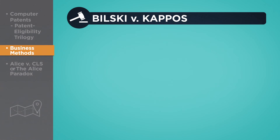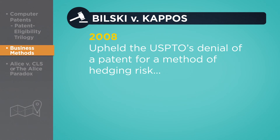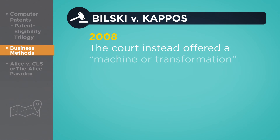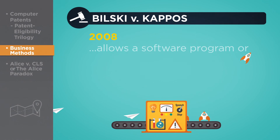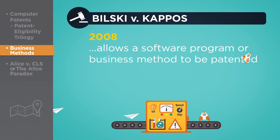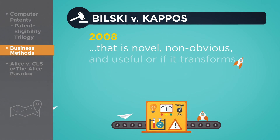The same court rejected the useful, concrete, and tangible result test just 10 years later in In re Bilski, which upheld the U.S. PTO's denial of a patent for a method of hedging risk in commodities trading. The court instead offered a machine-or-transformation test, which allows a software program or business method to be patented only if it is implemented on a specific machine to achieve a special purpose that is novel, non-obvious, and useful.